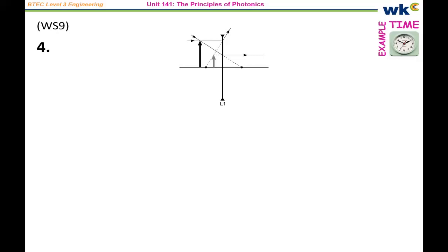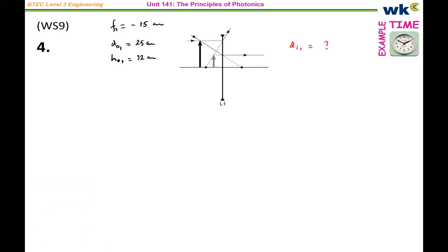Let's write the information we have. The distance of the object is 25 cm, and the height of object 1 is 12 cm. Also important is the focal length of the first lens, which is minus 15 cm. The path here will be to first use the thin lens equation to find the image distance for image 1. That's the first thing we're going to find.